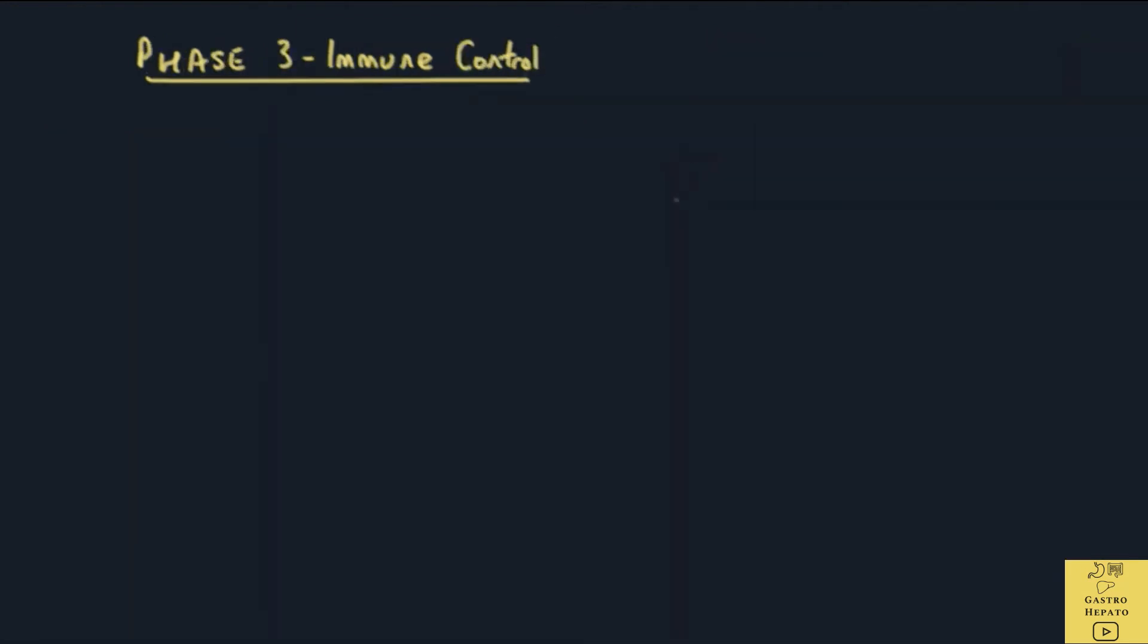Phase 3 is called the immune control phase. Either there is no virus or there may be a few mutant viruses with the M protein instead of the E protein that is circulating.